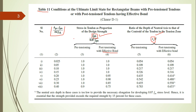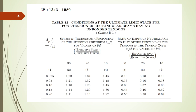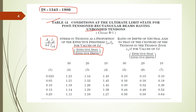For IS 1343:1980, Table 12 covers the condition for ultimate limit state for post-tension rectangular beams having unbonded tendons. Here you have to find the reinforcement ratio first, then find the effective span-to-depth ratio. After that you have to interpolate values to get f_pu, where f_p is the characteristic tensile strength of steel, equal to 1600 N/mm² in most cases. Also check whether the neutral axis lies in the web or the flange.